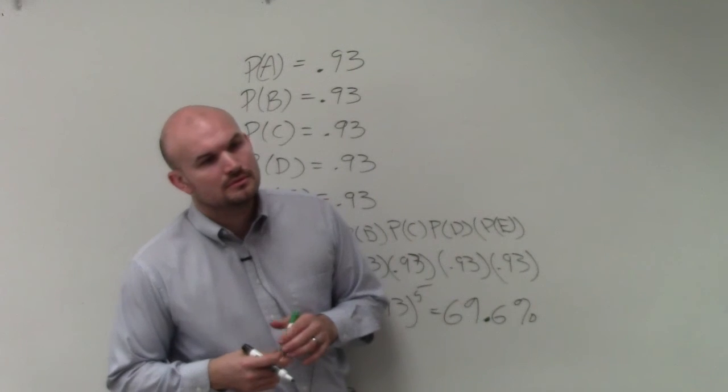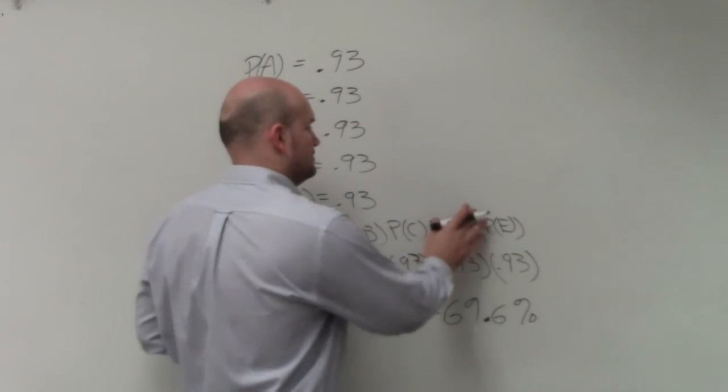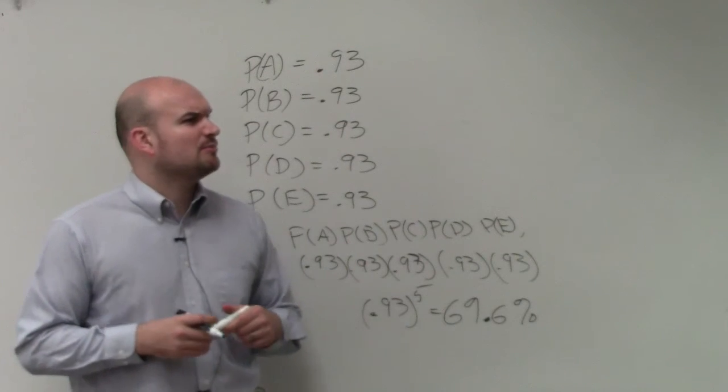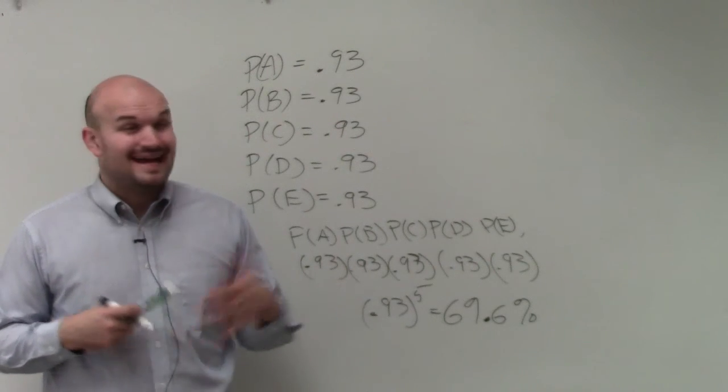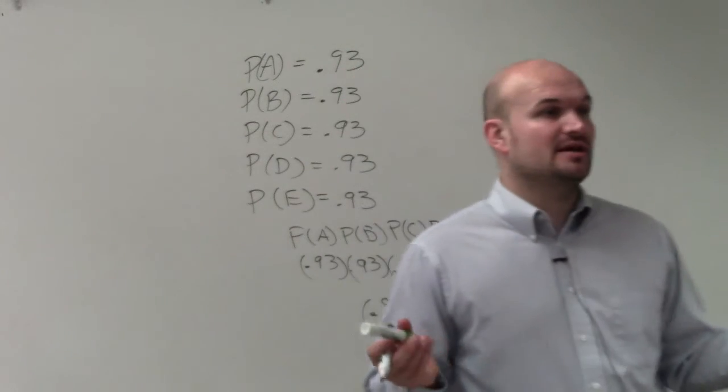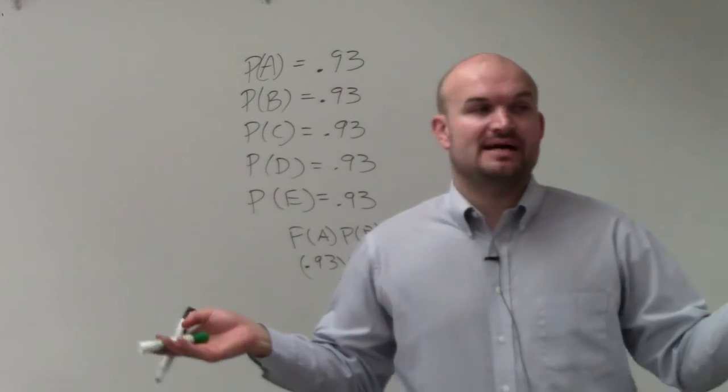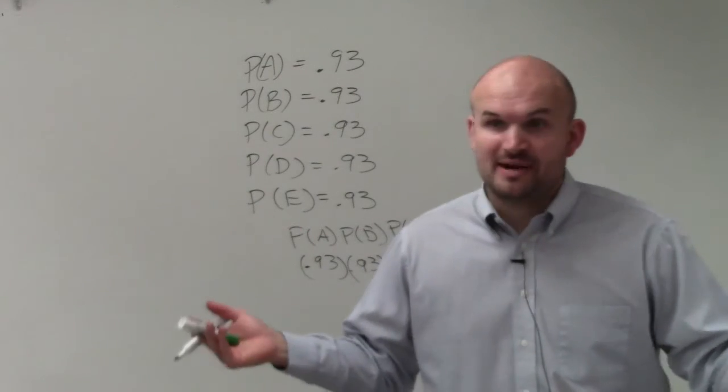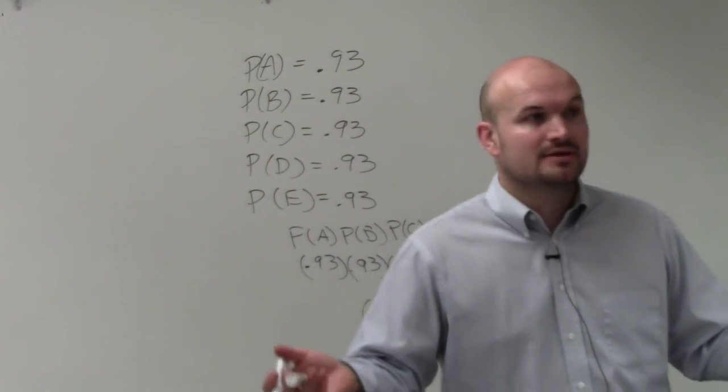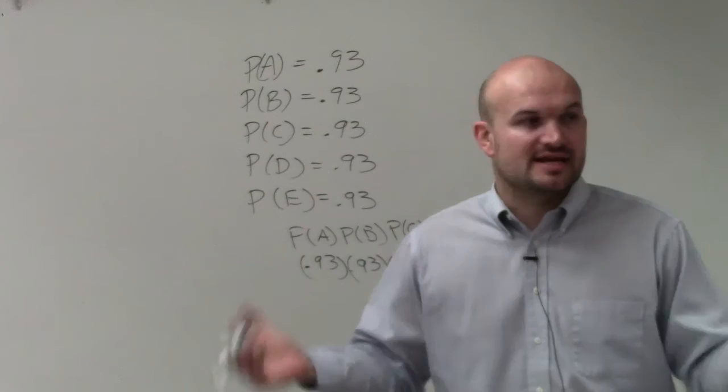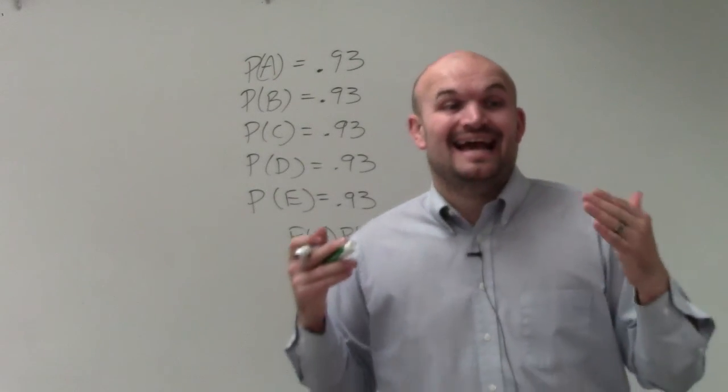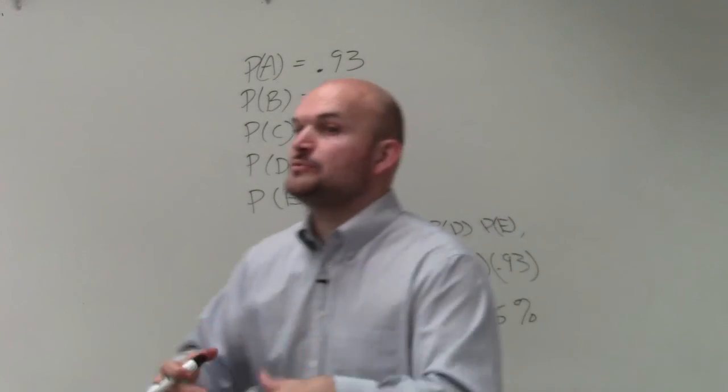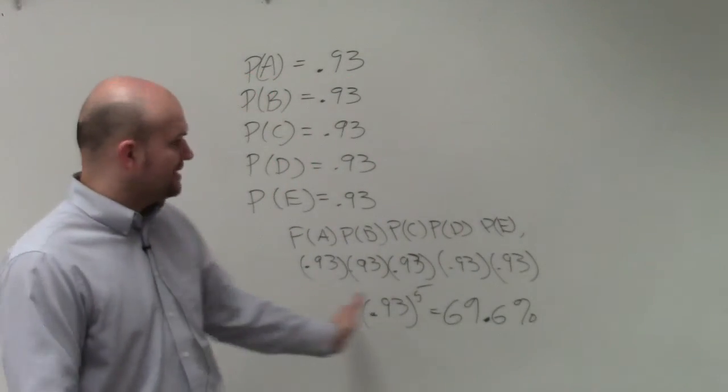But they're all multiplied. Does everybody see why we're multiplying them and not adding them? Adding them would be an or. That would be basically like what's the probability of the first one passing an inspection plus the second one passing inspection or the third one passing inspection or the fourth one, right? That's not asking or. They're saying what's the probability of this inspection passing and the next inspection passing and the next inspection passing? So since we're using and, we're multiplying these probabilities.